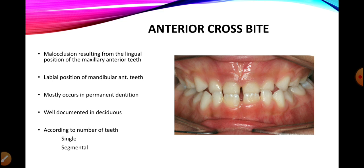If the crossbite is present in the anterior region it is known as an anterior crossbite, involving the anterior teeth from incisors to canines. The malocclusion results from the lingual position of the maxillary anterior teeth. Normally the upper anterior teeth should be lying labial to the lower anterior teeth, but here they are lying lingual to the lower anterior teeth. It is also known as reverse jet, reverse bite, or anterior crossbite.